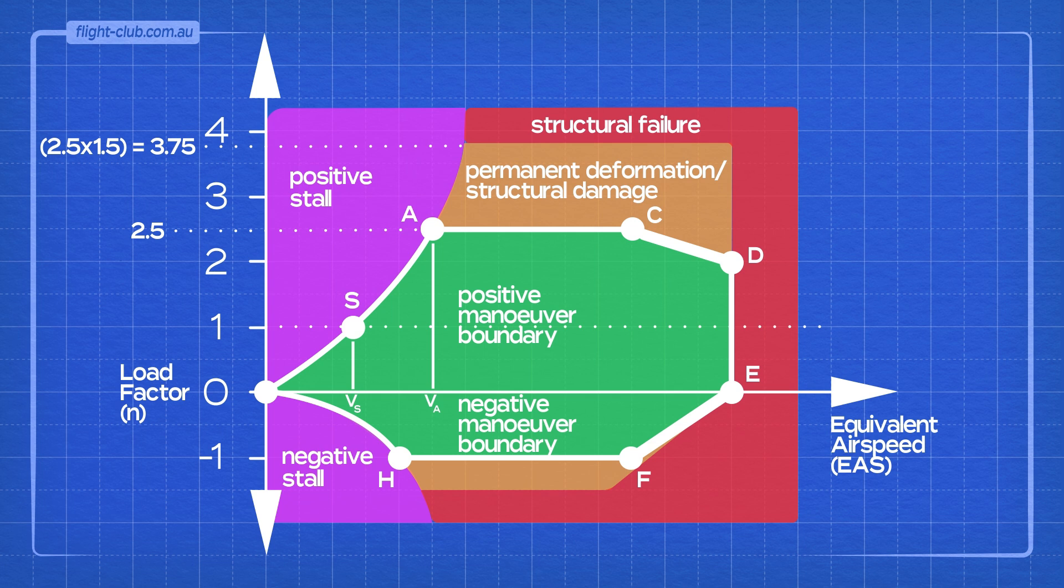The V speed designator for points C and F is VC, which stands for Design Cruise Speed.